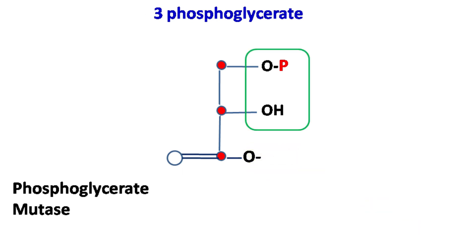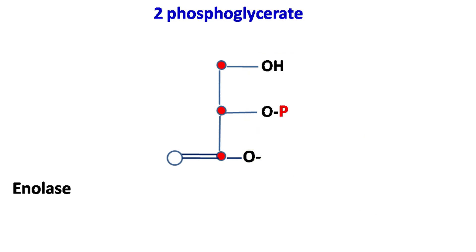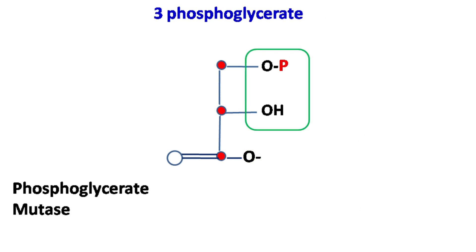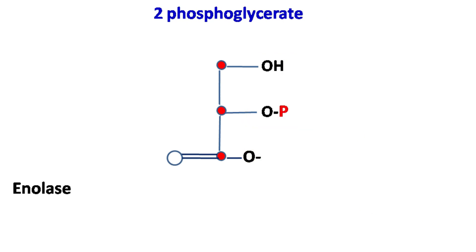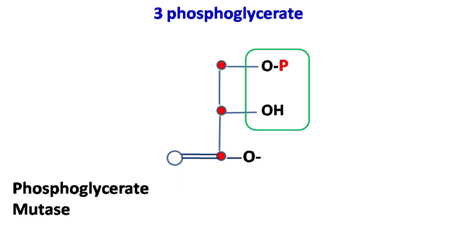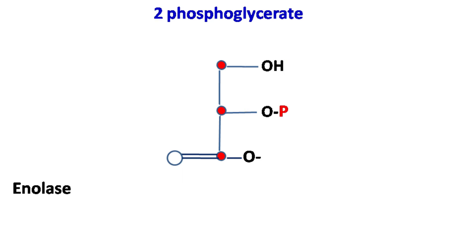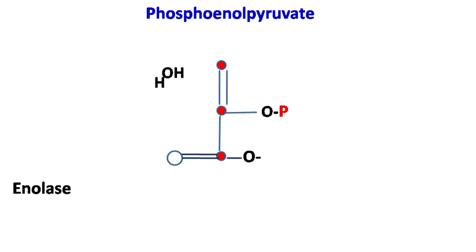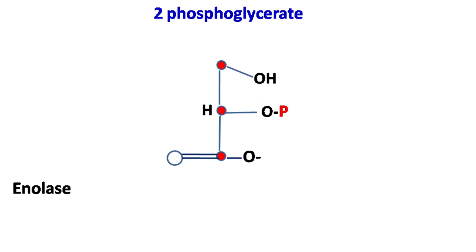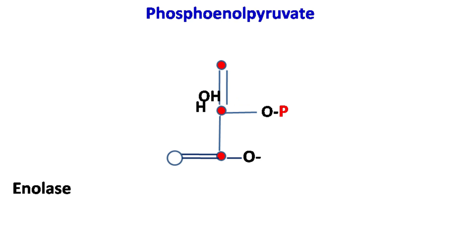3-phosphoglycerate is then converted into 2-phosphoglycerate by the enzyme phosphoglycerate mutase. Enolase then carries out a dehydration reaction to yield phosphoenol pyruvate.